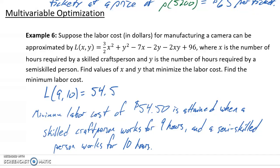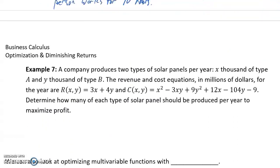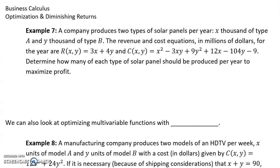So again, we optimize that multivariable function, and then interpret those results. In example 7, we have a company that produces two types of solar panels per year, x-thousand of type A and y-thousand of type B. The revenue and cost equations are provided below. What we want to do is determine how many of each type of solar panels should be produced per year to maximize profit.